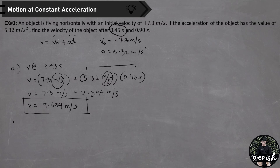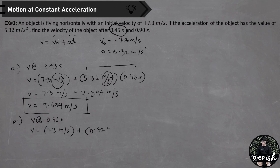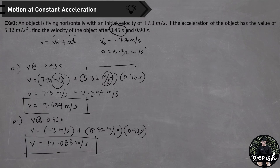For letter B, similarly, using the time of 0.9 seconds and the same formula, velocity is equal to 7.3 meters per second plus 5.32 meters per second squared times 0.9 seconds. Canceling units, the velocity is now equal to 12.088 meters per second. This is the answer for the velocity after 0.9 seconds. This concludes example number 1.